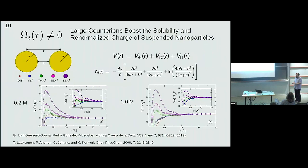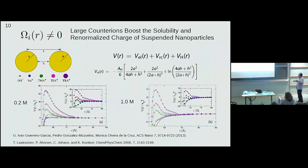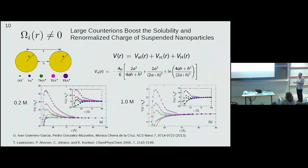What happens if we replace the sodium counter-ions with larger counter-ions such as tetramethylammonium, tetraethylammonium, or tetrabutylammonium? Experimentally, the solution is stable in that case. We performed calculations of the potential of mean force between two colloidal particles including ion correlations, excluded volume effects, and a short-range van der Waals interaction potential. For sodium hydroxide at 0.2 molar, the potential of mean force is negative (attractive interaction), but increasing the size of counter-ions produces a barrier that prevents the charged colloids from coagulating. Increasing the hydroxide concentration to 1 molar still shows this barrier, and the associated renormalized charge also increases — resulting in colloidal stability in the dispersion.